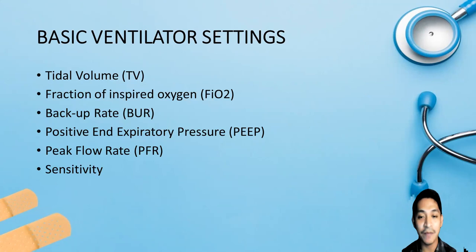The basic ventilator settings include tidal volume, FiO2, backup rate, peak flow rate, and sensitivity. Tidal volume is the air the patient receives per breath, usually computed based on the patient's ideal body weight.